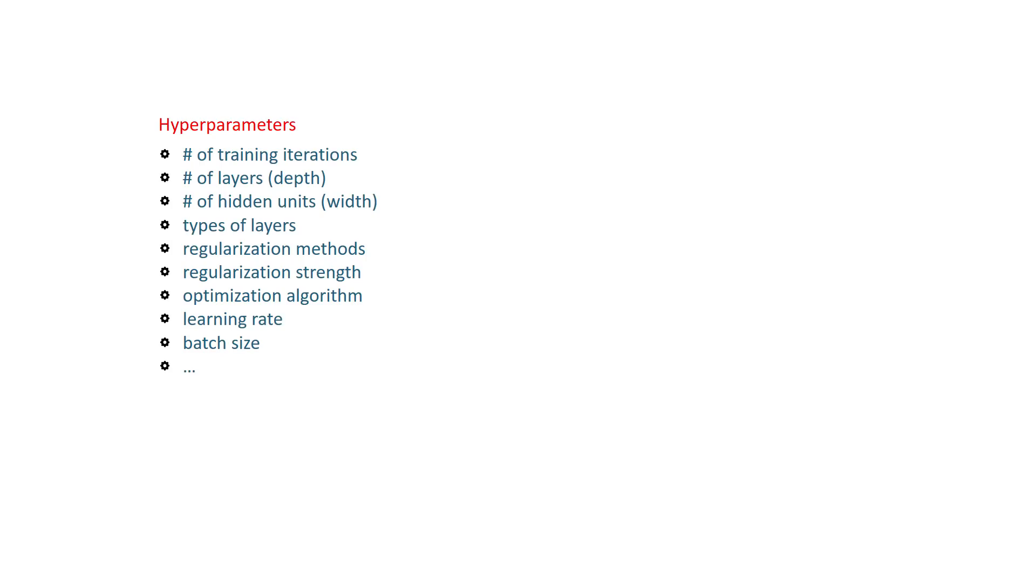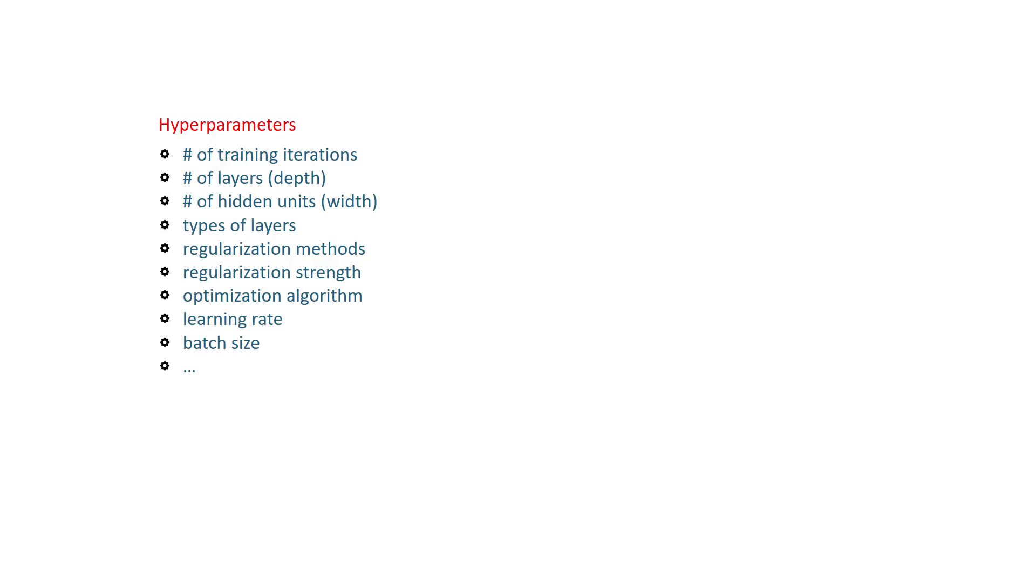Especially when we have a lot of hyperparameters to tune, there might be a risk of overfitting to the validation set. Although the model never sees the validation set, we do and we tune the knobs to reconfigure our model accordingly.